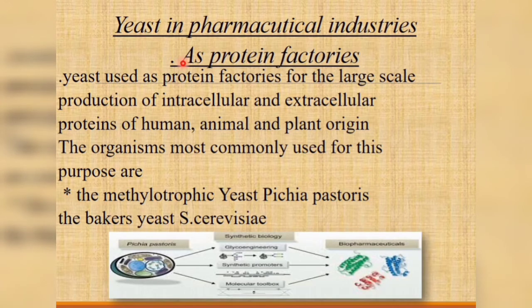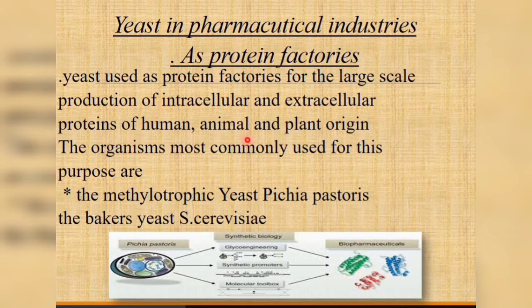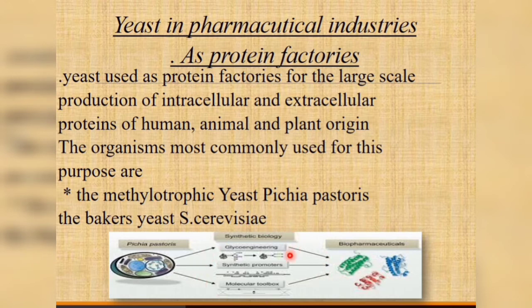Yeast used in pharmaceutical industries as protein factories: yeast is used as protein factories for the large-scale production of intracellular and extracellular proteins of human, animal, and plant origin. The organisms most commonly used for this purpose are the methylotrophic yeast Pichia pastoris and the baker's yeast Saccharomyces cerevisiae. This is how these bio-products are being produced.